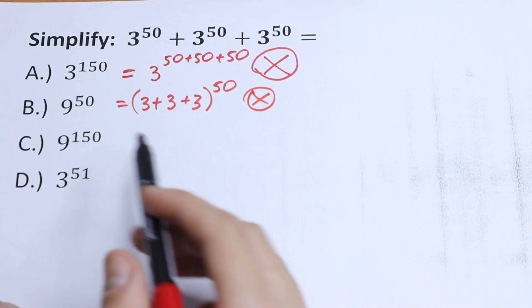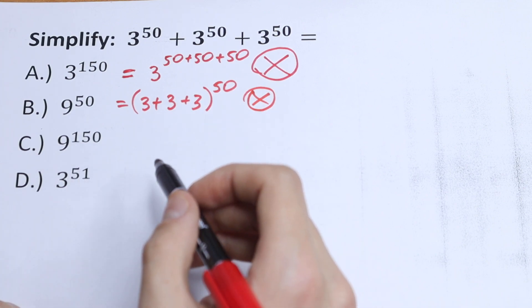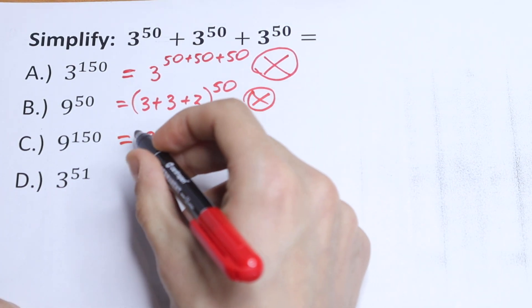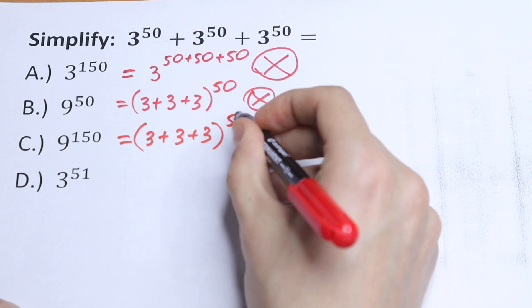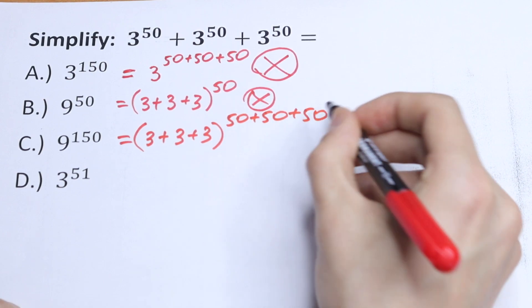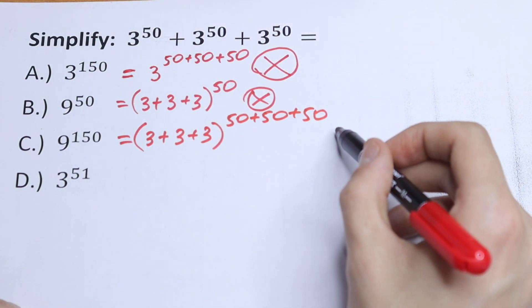For those who choose option C, 9 to the power 150: this 9 can be written as 3 plus 3 plus 3 to the power 50 plus 50 plus 50, which is not the same as in the beginning, so option C is not correct.